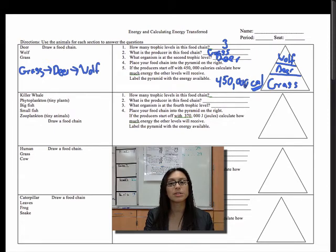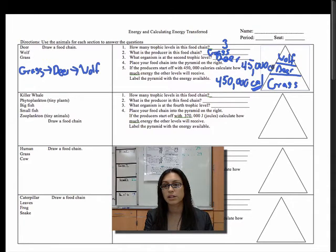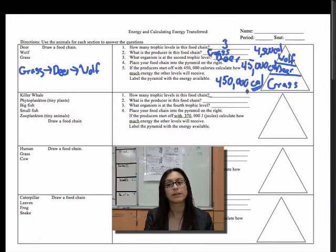If you take off a zero from this number, that's going to show you what 10% of this number is. So for the deer, 10% of 450,000, it's going to receive 45,000 calories. The wolf up here is going to receive 10% of that. So the wolf will receive 4,500 calories. That is how you're going to calculate what percent of energy gets from one level to the next.